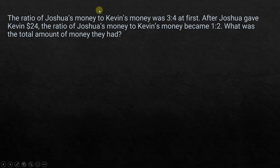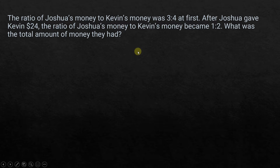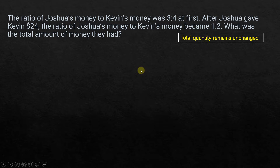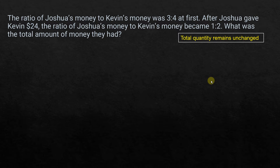Even though Joshua gave money to Kevin — Joshua loses some money and Kevin gains some money — the total amount of money together for Joshua and Kevin remains the same. So that is the core concept here: total quantity or total amount remains unchanged. That is the technique we are going to use to solve this.